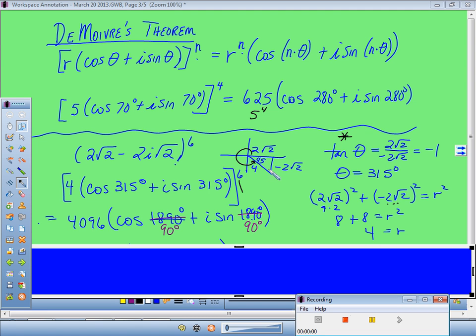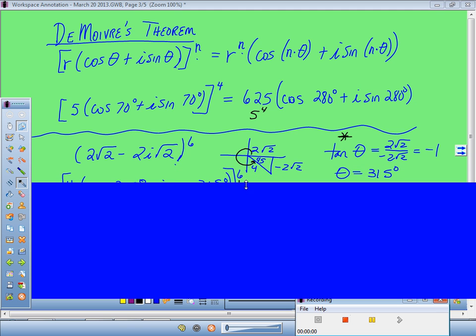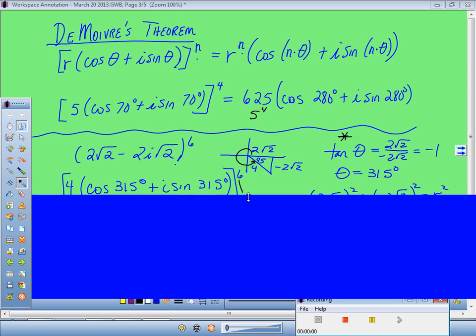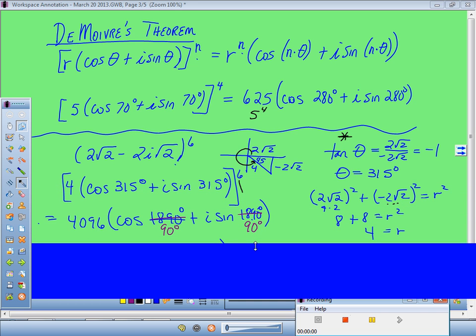When last we left off with this problem, we were trying to take this complex number, 2√2 - 2i√2 to the 6th power. We didn't want to do it by hand, so we were turning it into polar form. Over here to the right, we had just calculated that the angle was 315 degrees, and that the radius r was going to turn out to be a nice number, 4.